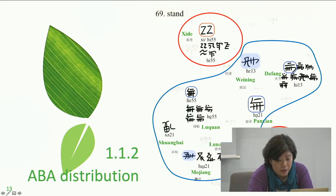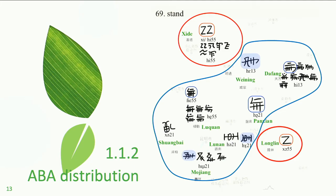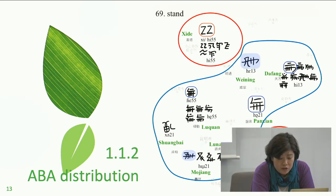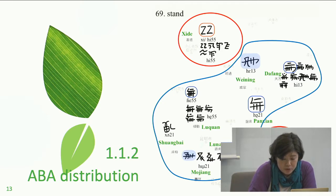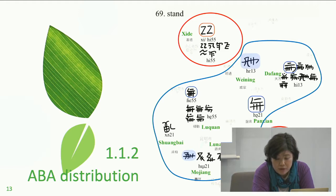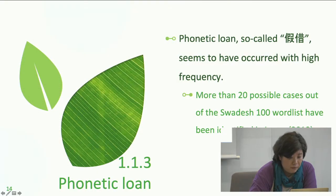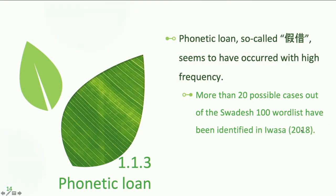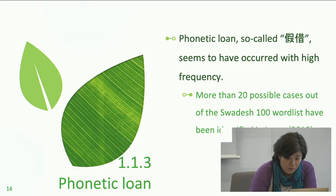This map shows an A-B-A distribution. In this kind of distribution, the peripheral distribution A is thought to be older than the central one B, if there is no big movement of people or if a feature of A does not occur independently. Nevertheless, it is not possible to eliminate a strong possibility of phonetic loan having coincidentally happened in both areas — Qide and Longling. One of the most frequent and remarkable phenomena in the E script is a phonetic loan, jia jie. This has happened with high frequency, and in my maps more than 20 possible cases have been identified.